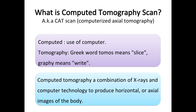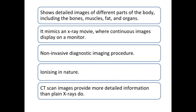A CT scan is an examination that uses x-rays and a computer to obtain a cross-sectional image of the human body. CT scans show detailed images of different parts of the body including the bones, muscles, fat, and organs. It mimics an x-ray movie where continuous images display on a monitor. It is a non-invasive diagnostic imaging procedure that is ionizing in nature, meaning the individual is exposed to radiation. CT scan images provide more detailed information than plain x-rays.